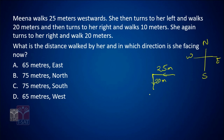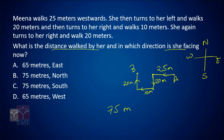She again turns to her right, which from westward is northward, and walks 20 meters north. So her starting point is A and her ending point is B. The total distance walked is 25 + 20 + 10 + 20 = 75 meters. The last direction she was walking was northward, so she is now facing north. The answer is option B.